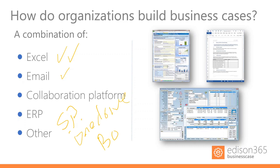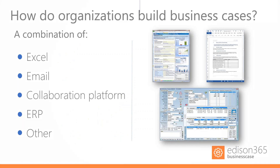Collaboration platforms like SharePoint, OneDrive, and Box are a step above email and can enhance teamwork. But there's still something missing: standardization — the standard processes, the standard ways of doing things, and the templatization of the business case.